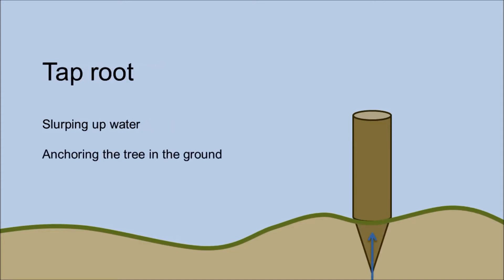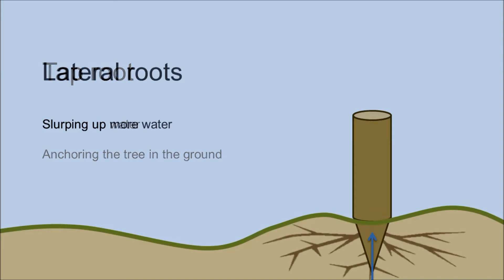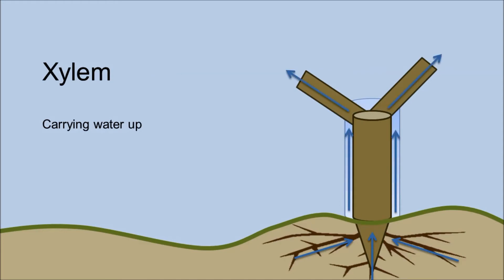The taproot is slurping up water and anchoring the tree in the ground. The lateral roots slurp up even more water. The xylem carries the water up to the top of the tree.